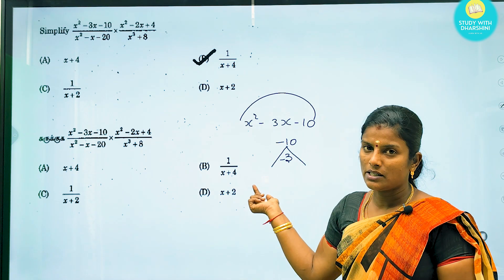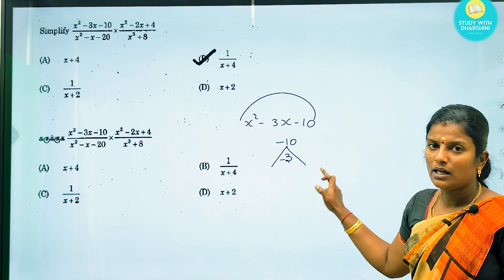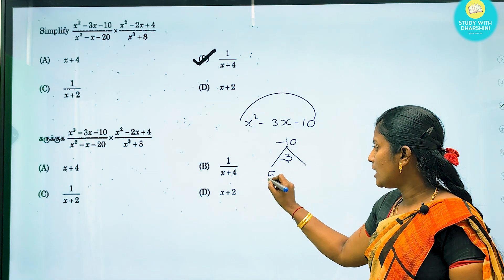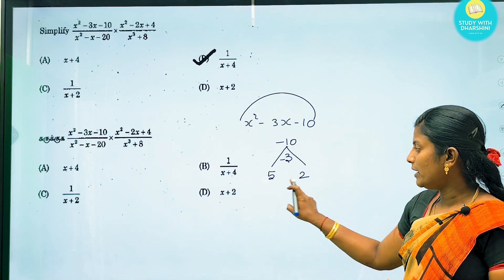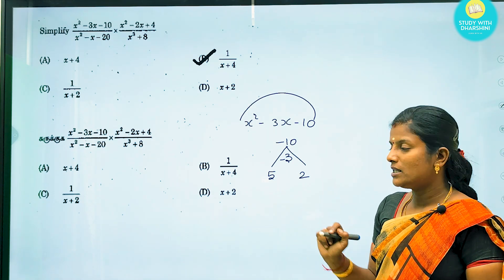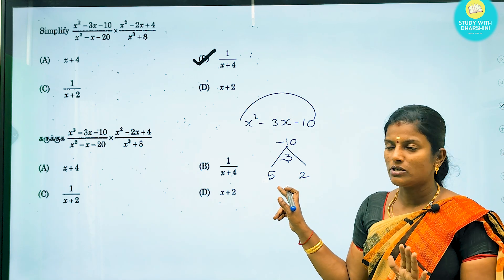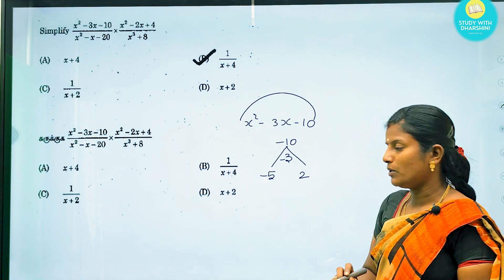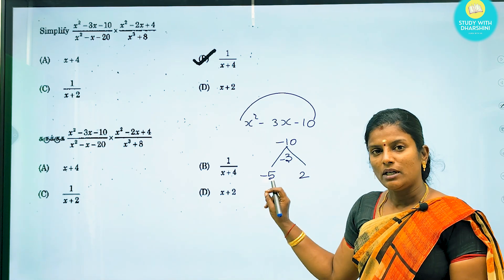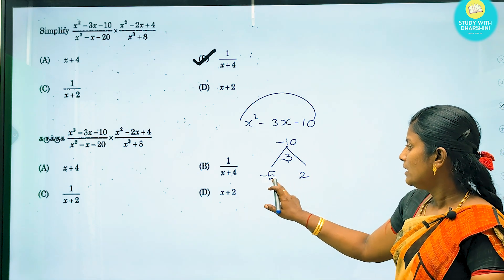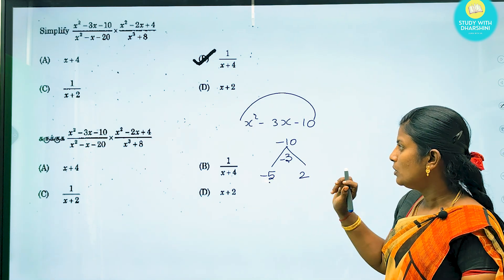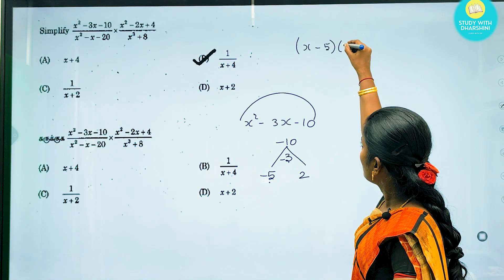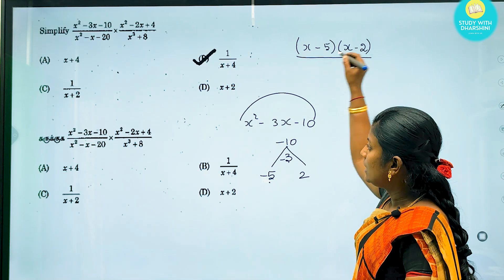We need two numbers that multiply to minus 10 and add to minus 3. The roots are minus 5 and plus 2: minus 5 plus 2 equals minus 3, and minus 5 times 2 equals minus 10. So the numerator factors as (x minus 5)(x plus 2).